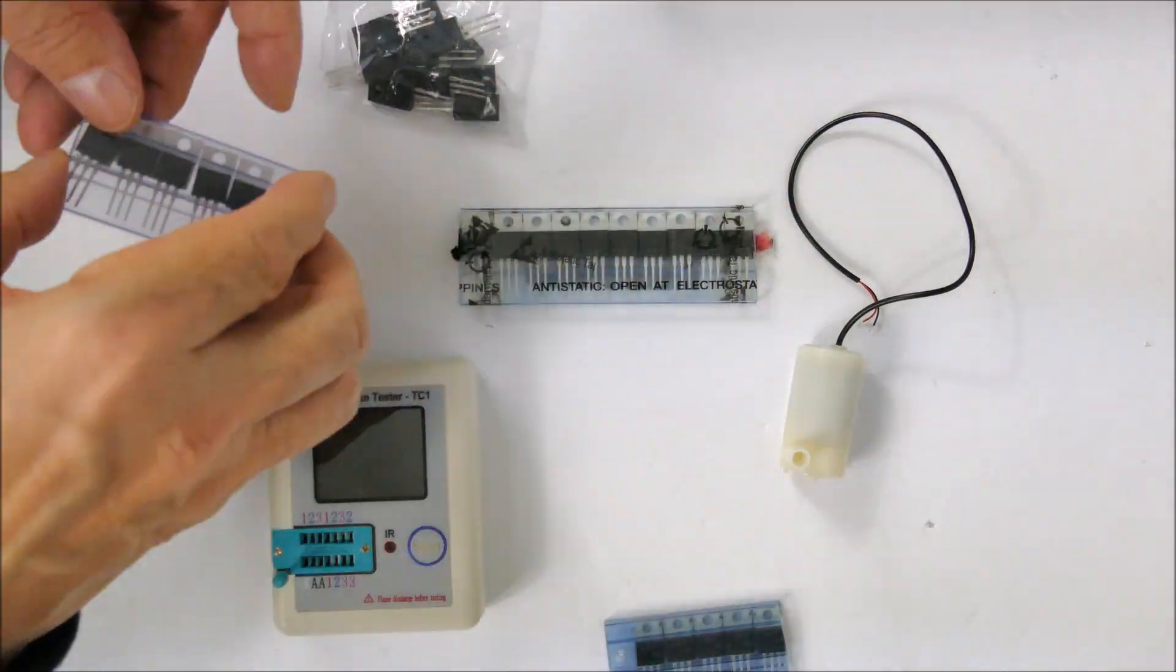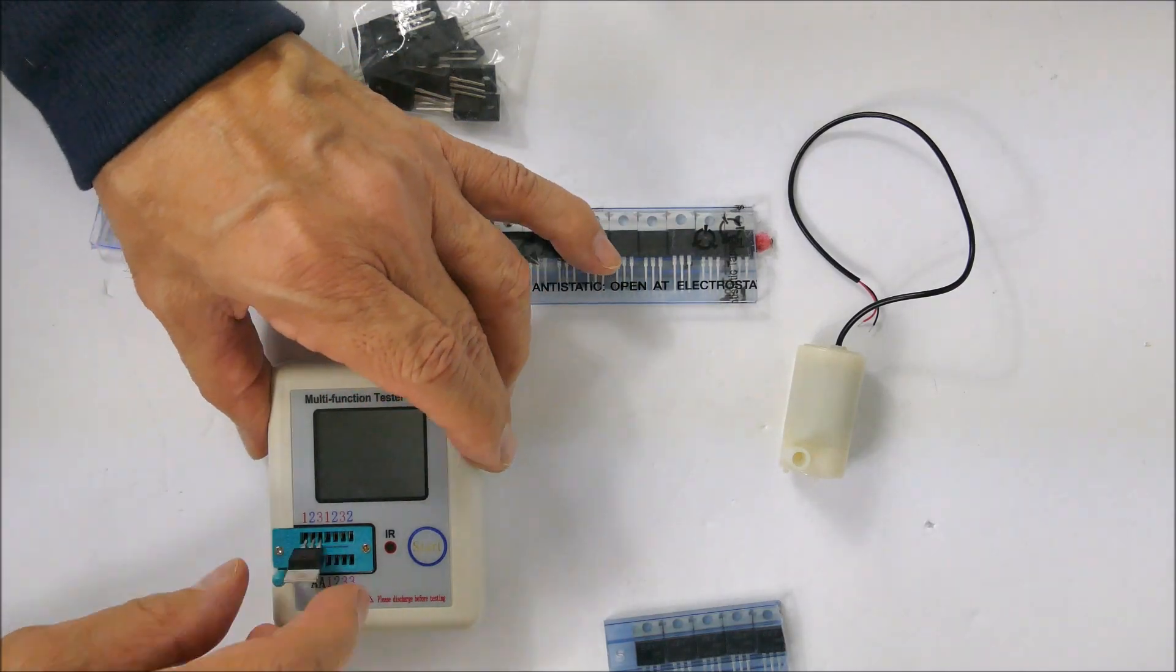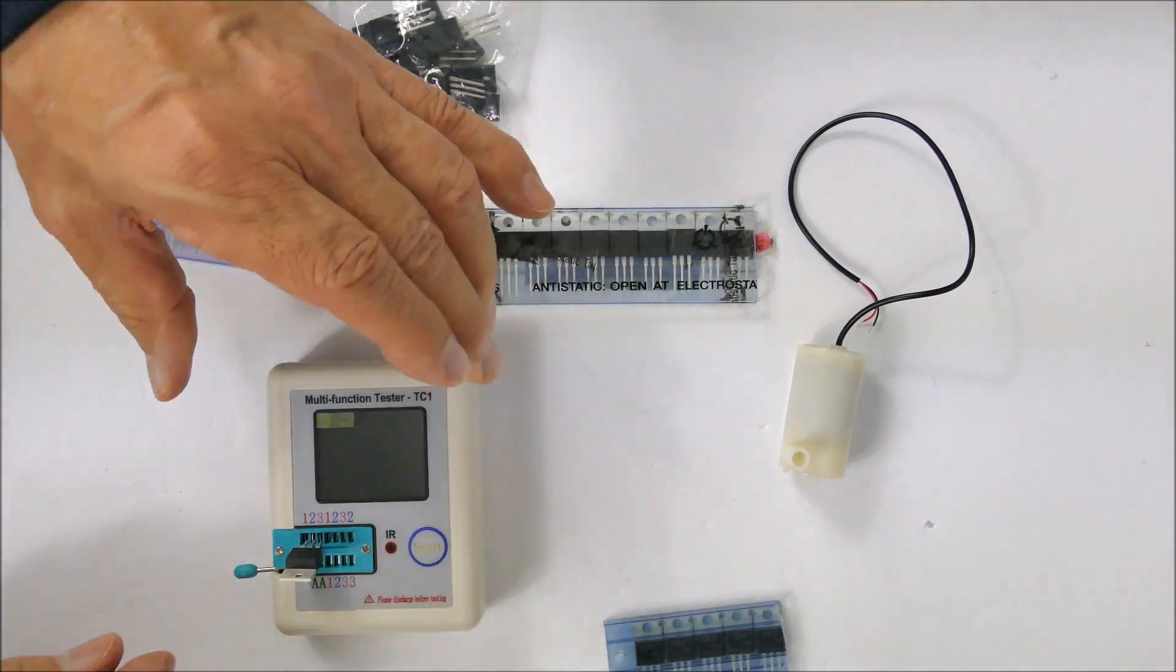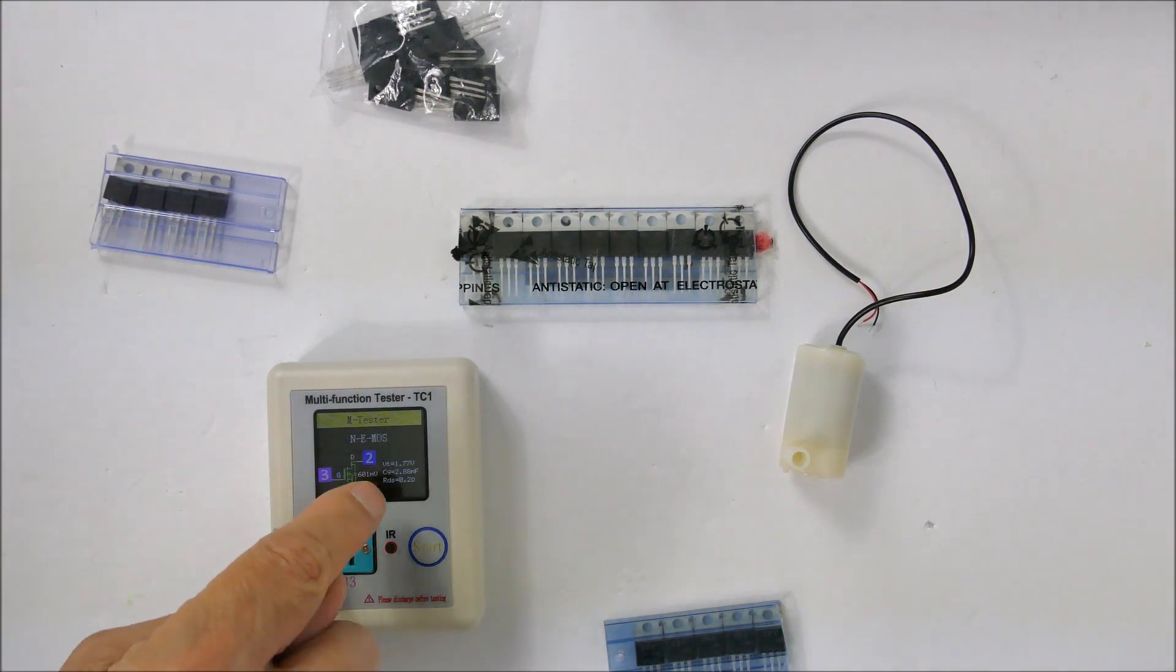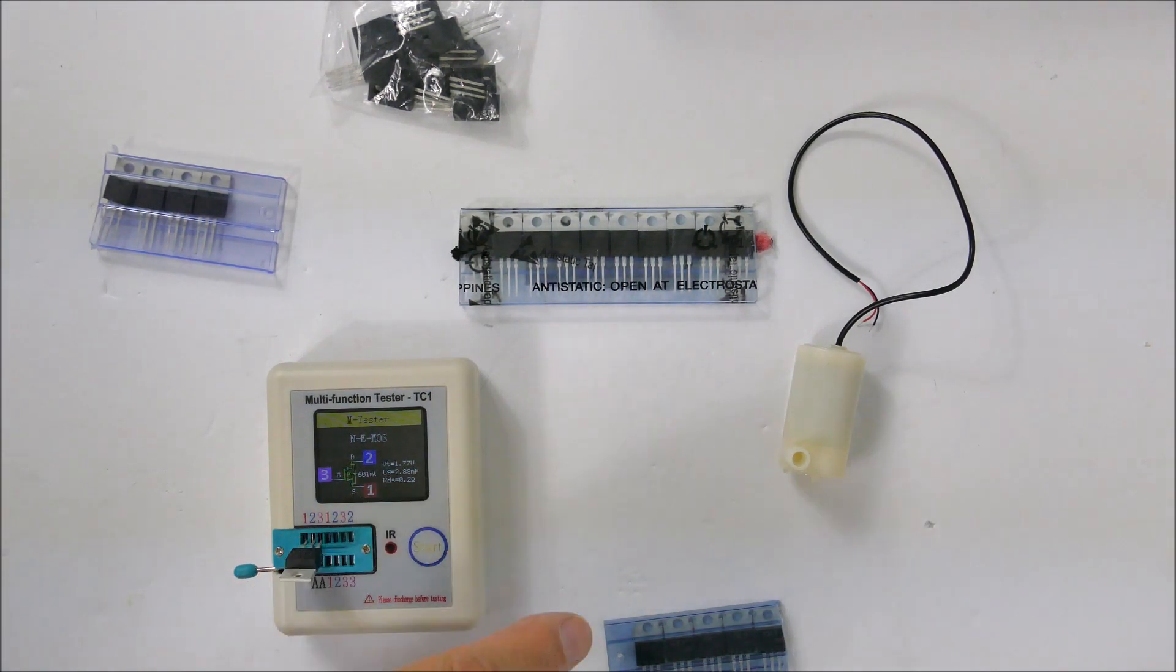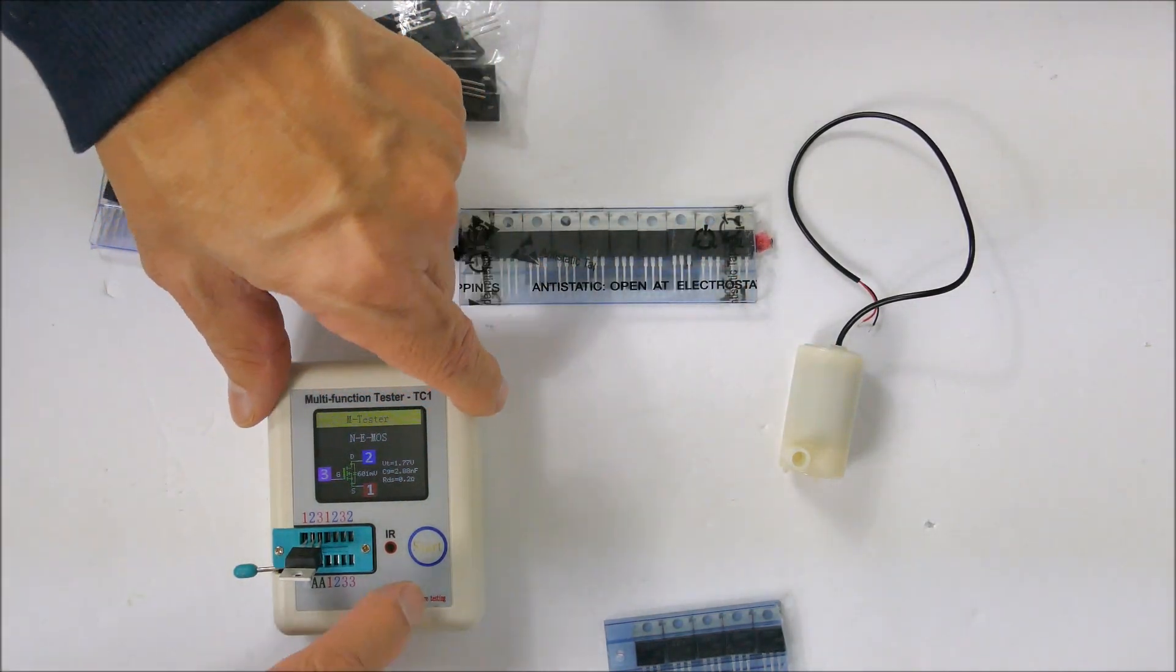Another N-channel MOSFET. Threshold voltage is only 1.77 volts, so that's very low and that's just what I want. The on-resistance is 0.2 ohms, so that will easily drive this motor which is a 5 volt motor and only takes probably a couple hundred milliamps at the most.